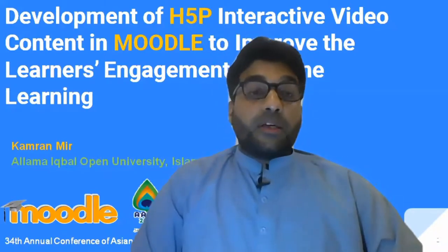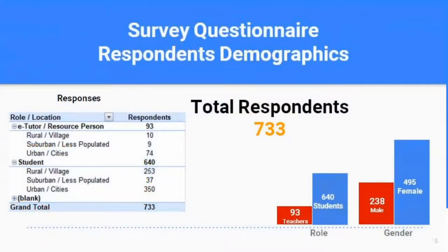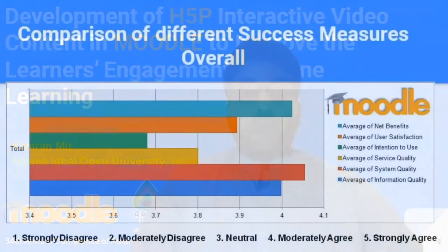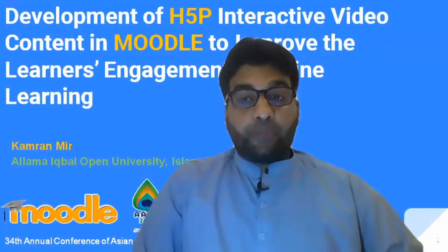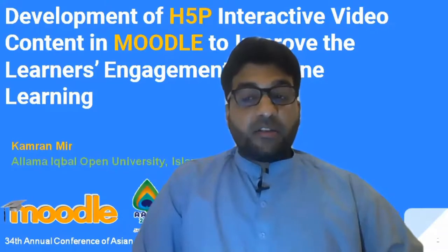In the results, around 733 respondents completed the questionnaire based on the DeLone and McLean success model. Of those, 495 were female and 238 were male. Around 640 were students and 93 were teachers. This chart shows the overall comparison of different success measures. The least agreement was shown in intention to use, while the highest success measure was found in system quality.